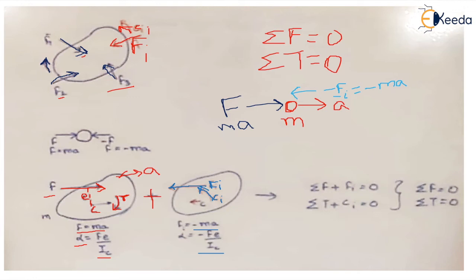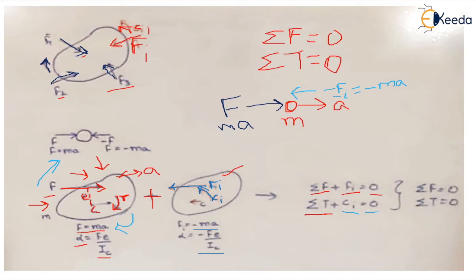So even if there are n number of forces or n number of torques acting on this body, the summation of all forces plus the inertia force equals zero, balancing the system. Similarly, the summation of all externally applied torques plus the inertia couple equals zero, meaning they are equal and opposite — this satisfies the condition of static equilibrium.